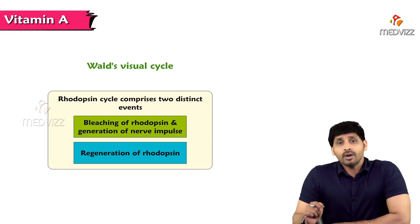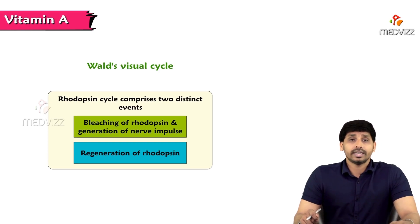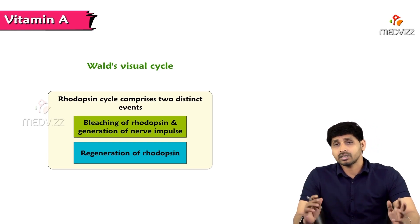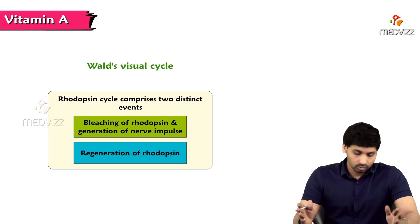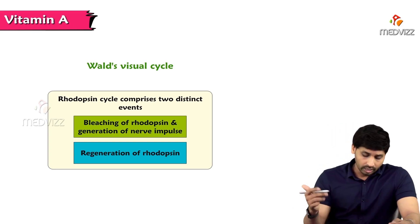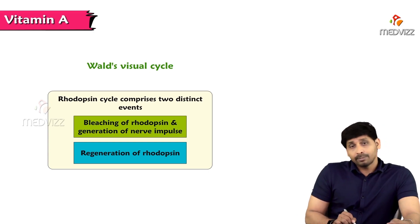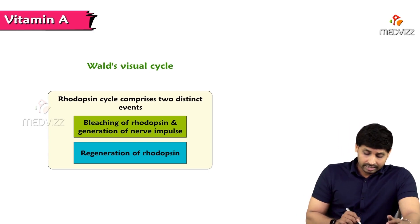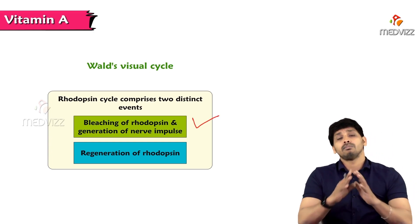Vitamin A and vision is best explained by a cycle called Wald's Visual Cycle, named after the scientist who extensively worked on it. This cycle has two events: one is bleaching of rhodopsin, which helps in the generation of a nerve impulse, and the second is regeneration of rhodopsin.